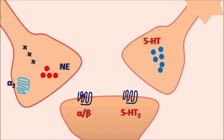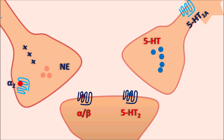Norepinephrine can also act on presynaptic alpha-2 receptors, which are auto-inhibitory in nature — inhibiting further release of norepinephrine. Similarly, 5HT is released and acts on postsynaptic 5HT2 receptors, producing serotonergic transmission. On the serotonin neurons at the somatodendritic cells, a 5HT1A receptor is present which is also auto-inhibitory in nature.